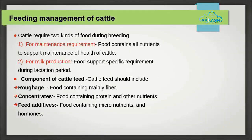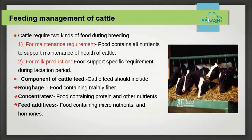Feeding management of cattle: cattle require two kinds of food. 1. For maintenance requirement — food containing all nutrients for maintenance of health. 2. For milk production — food with specific requirements during the lactation period, increasing its duration and increasing the milk yield. Components of cattle feed should include: 1. roughage, 2. concentrates, and 3. feed additives.